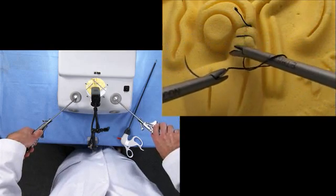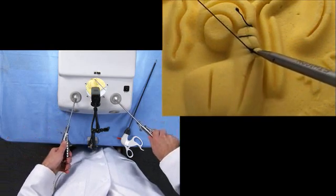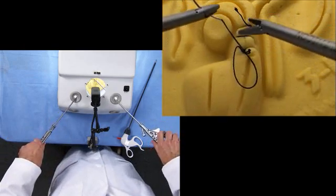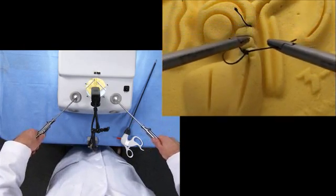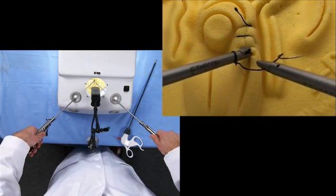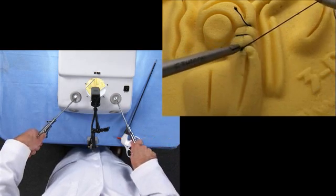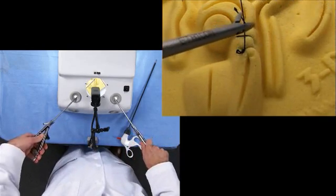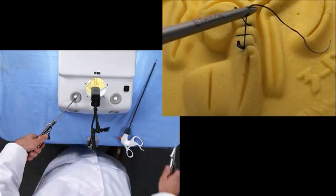Create our camel's hump. Change hands again. Needle to the right of the needle driver. Camel's hump. Grasp our tag. And then we'll cut it.